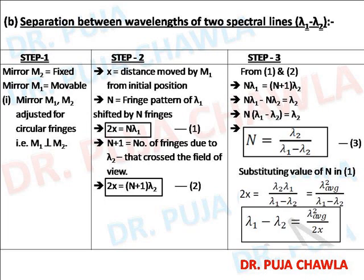For wavelength lambda 2, suppose capital N plus 1 fringes cross the field of view. That gives equation 2: 2x equals capital N plus 1 into lambda 2. In the final step, comparing equations 1 and 2: N lambda 1 equals N plus 1 into lambda 2. Bringing N to one side, we find capital N equals lambda 2 divided by lambda 1 minus lambda 2. Label this equation 3.